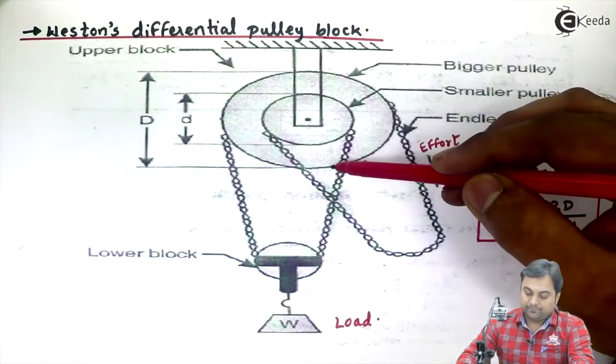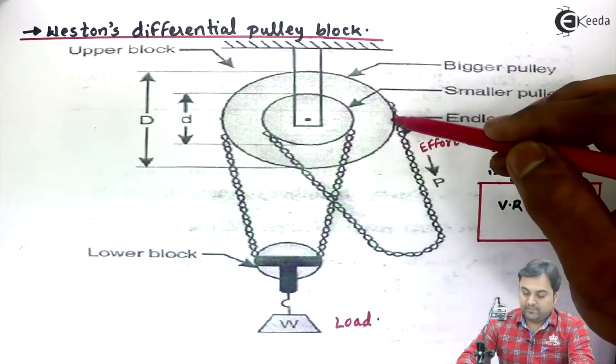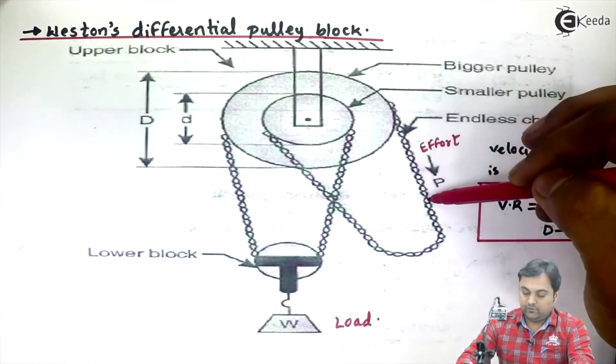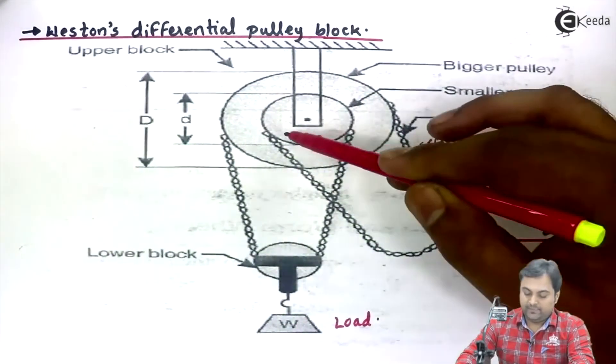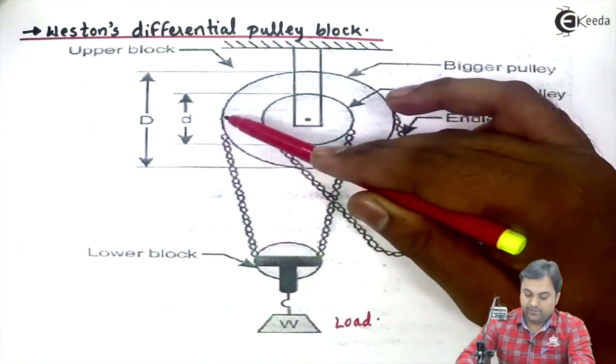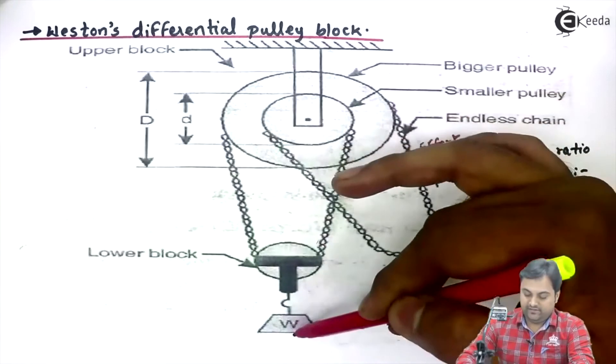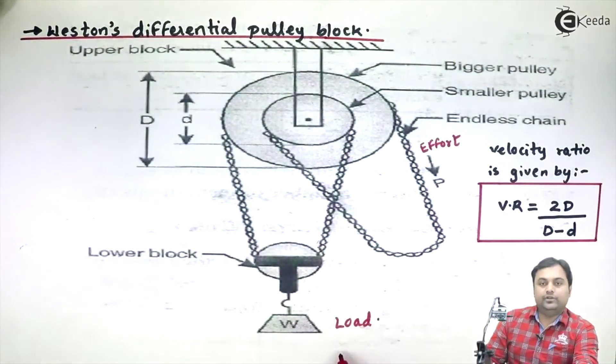This pulls the weight up. By pulling this chain down and applying an effort, this end rotates and delivers the chain onto the bigger pulley, and the weight is lifted. By applying a small effort, we are able to lift a heavy load.